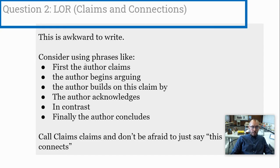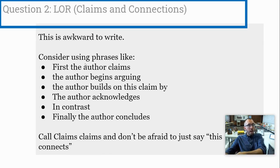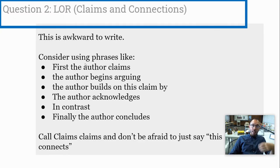The line of reasoning is an awkward thing to write. Consider using phrases like 'first the author claims,' 'the author begins arguing,' 'the author builds on this claim,' 'the author acknowledges this,' or 'in contrast, the author says this.' These help you show connections between different parts of the map. Feel free to call claims 'claims,' and don't be afraid to explicitly say 'this connects to the main idea.' This is more of a reading task than a writing task.